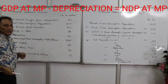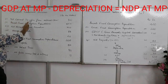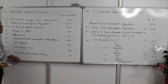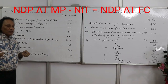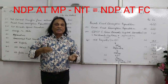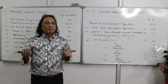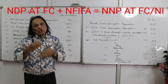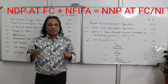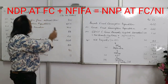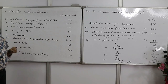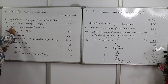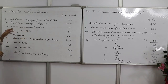Let's see a numerical from board exams. Calculate national income, which is NNP at factor cost. All values are in rupees and crores. They've given net current transfers from abroad (rest of world) as 30. We never take this into consideration — transfer incomes don't lead to any production, so just ignore net current transfers from rest of the world.